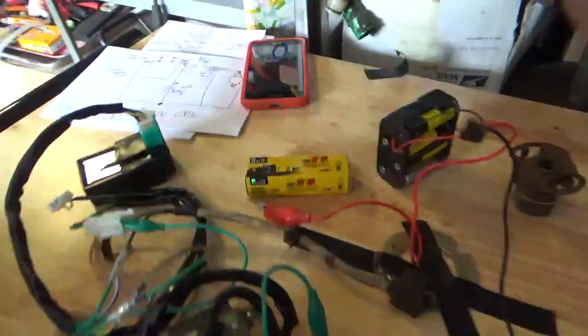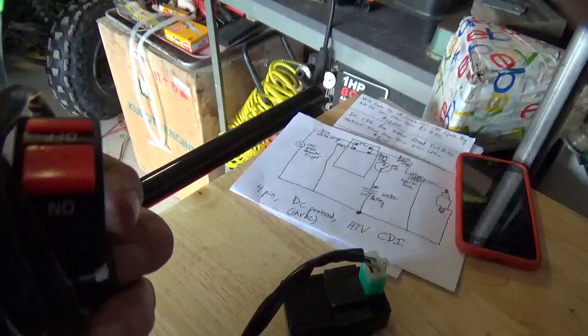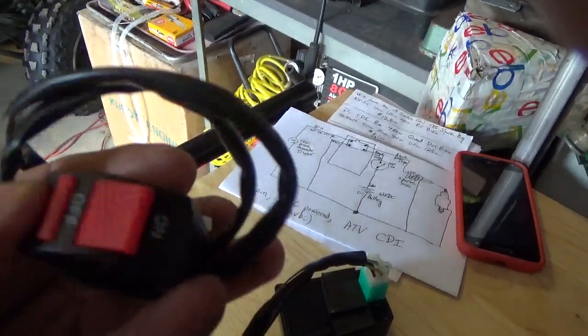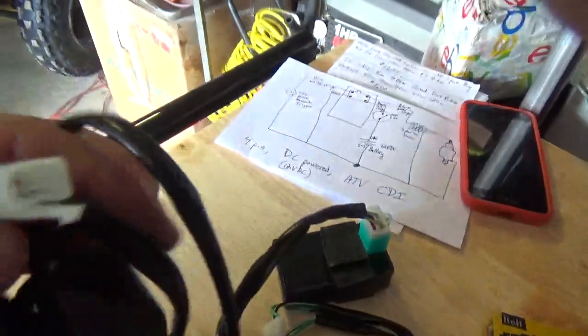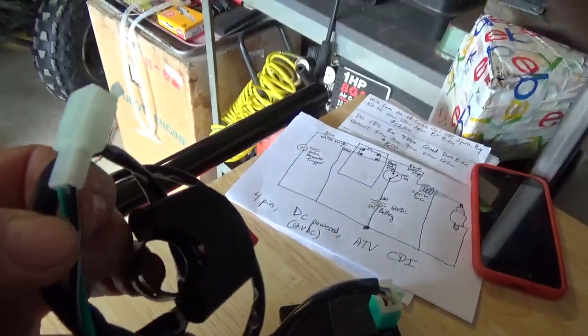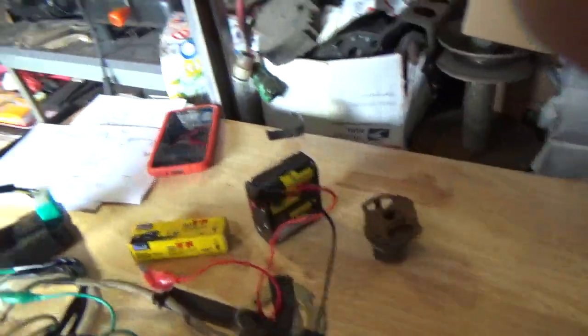This switch here, you notice I didn't use it anywhere here. The way this switch works is when you push it to off, right, that's on, that's off. What it does is it shorts this black and white wire to ground.